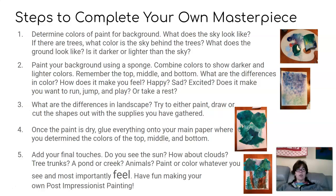Here are some steps to complete your own masterpiece. Determine the colors of paint for your background. What does the sky look like? If there are trees, what color is the sky behind the trees? What does the ground look like — is it darker or lighter than the sky? Paint your background using a sponge. Combine colors to show darker and lighter colors. Remember the top, middle, and bottom — what are the differences in color? How does it make you feel? Happy? Sad? Excited? Does it make you want to run, jump, and play? Or take a rest?